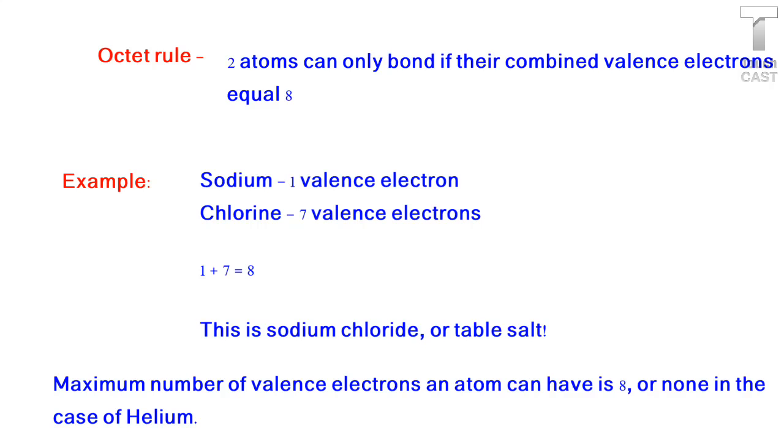So an example would be sodium and chlorine. Sodium has 1 valence electron and chlorine has 7 valence electrons. So these two atoms could chemically react and bond because 1 plus 7 is 8. And this is how sodium chloride is formed, which is what you know as table salt.